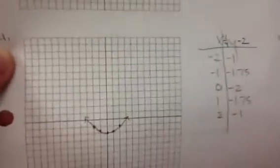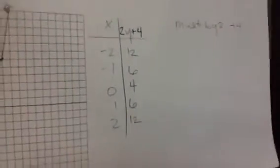Number 12 is E, 15 is G, 18 is B. For 21, my in/out table would multiply y by a fourth and subtract 2. For 24, my in/out table would multiply y by 2 and add 4.